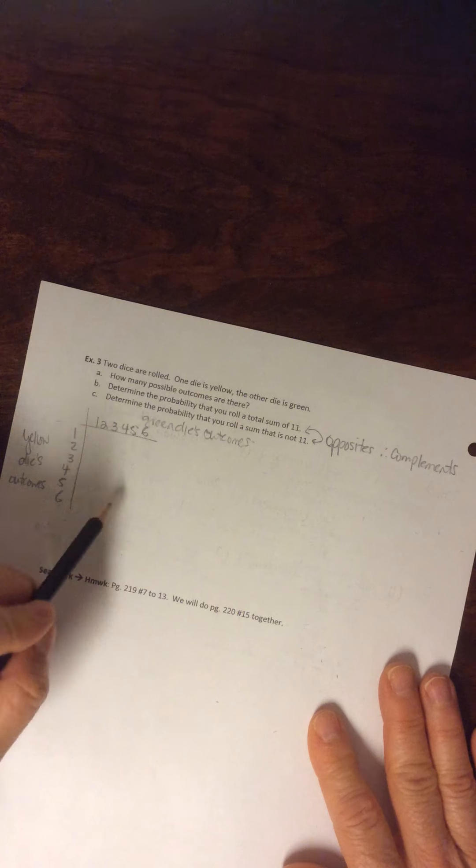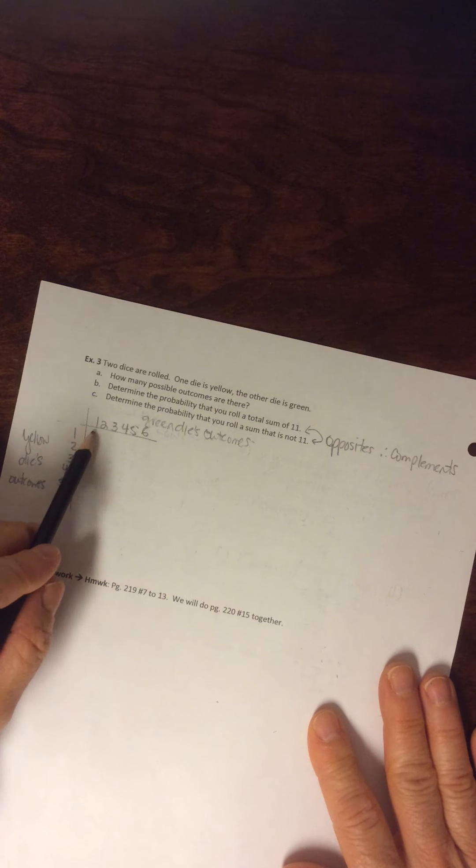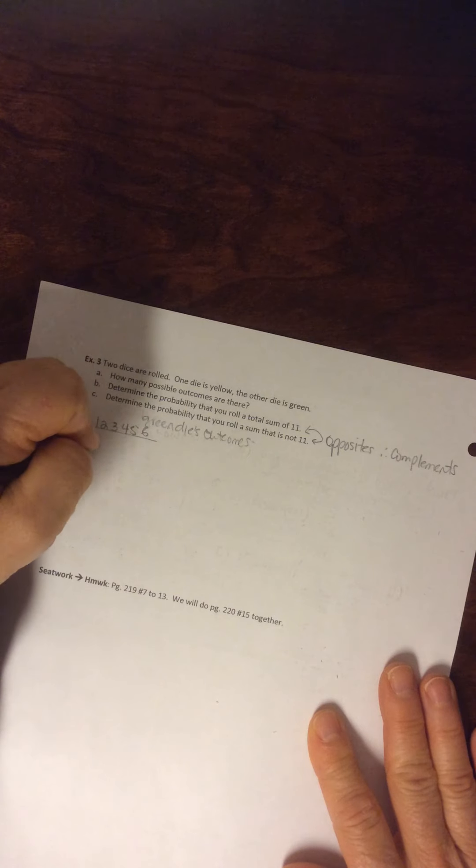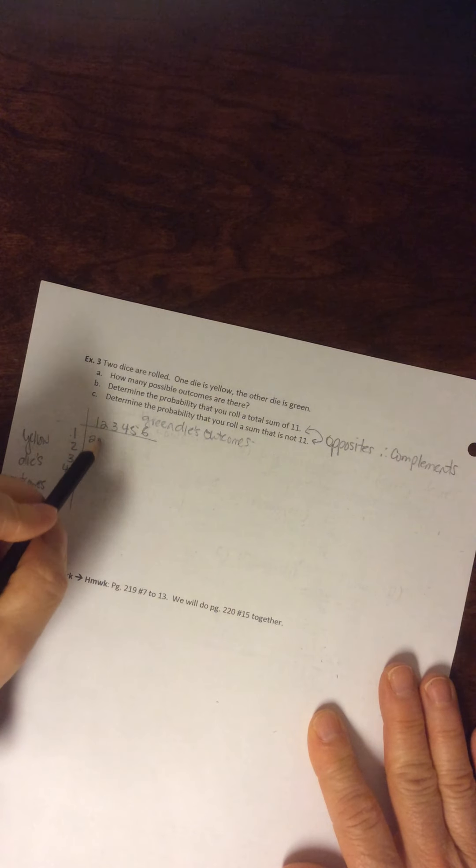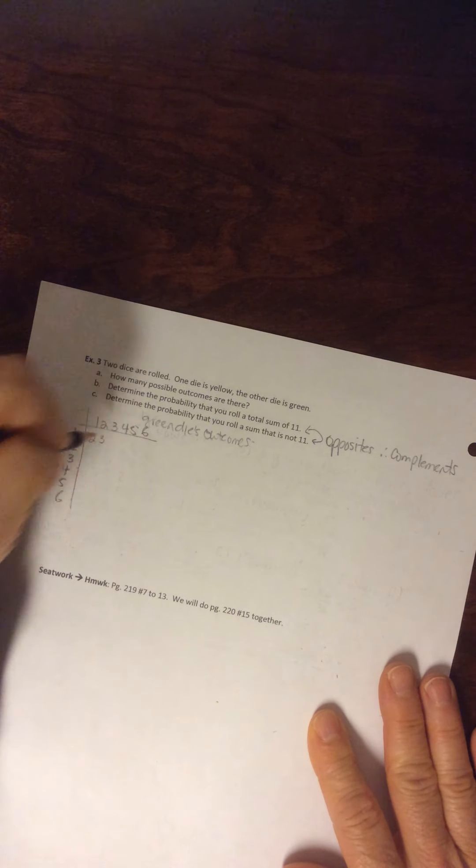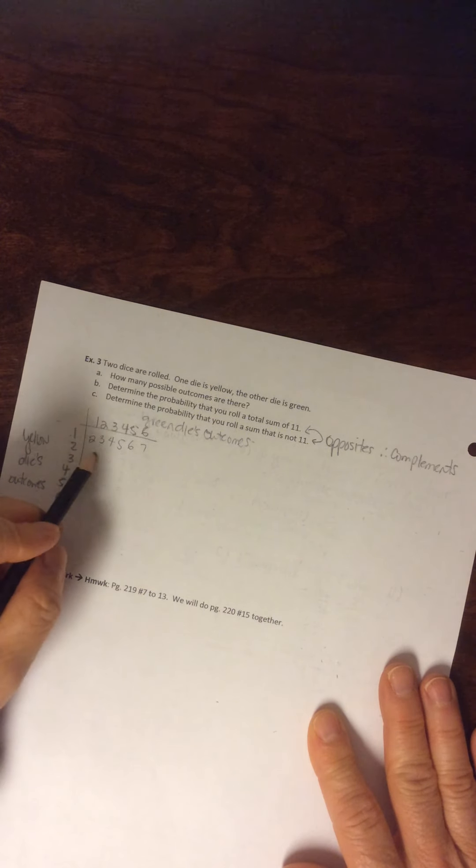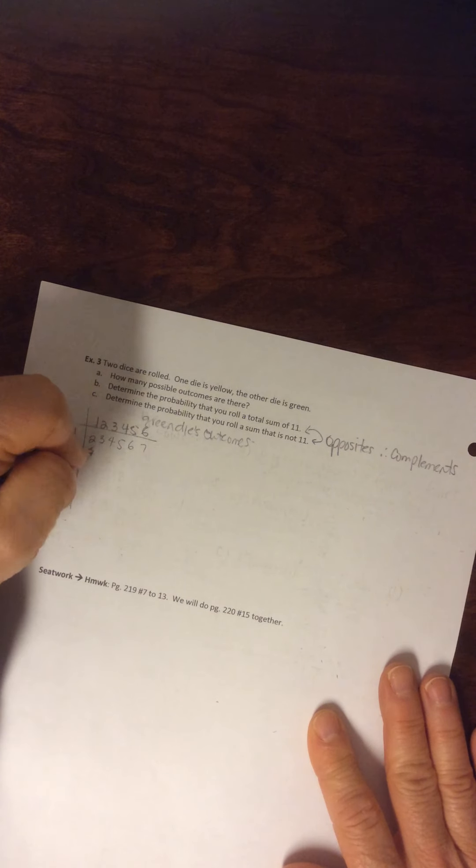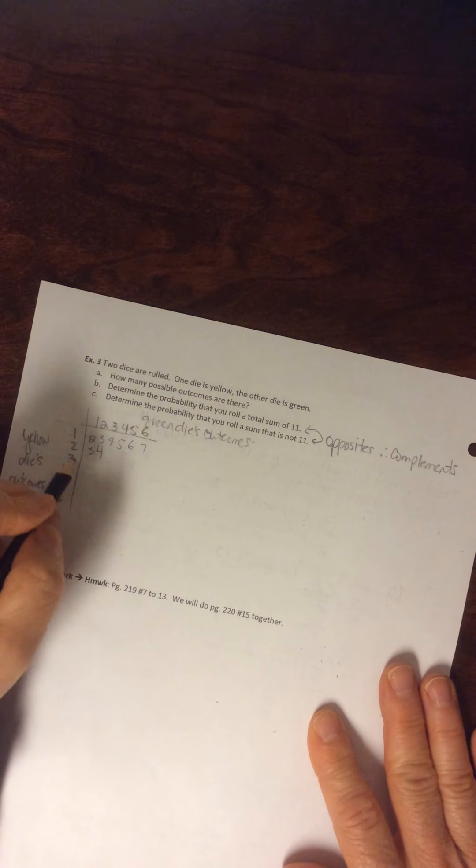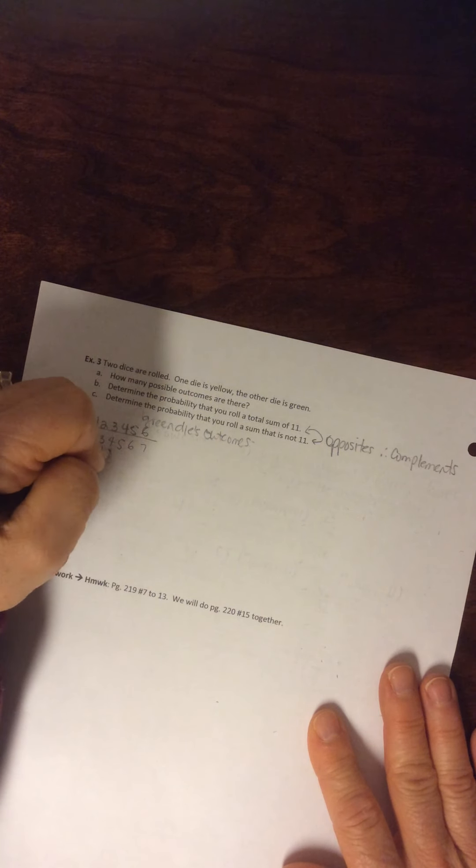So the sums are a result of adding the different outcomes together. So 1 plus 1 is 2. 1 plus 2 is 3. 1 plus 3 is 4, 5, 6, 7. 2 plus 1 is 3. 2 plus 2 is 4, 2 plus 3 is 5, and so on.